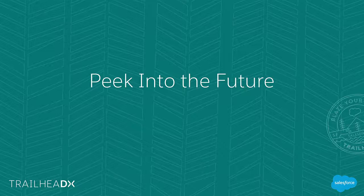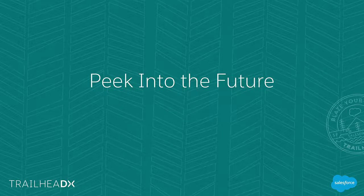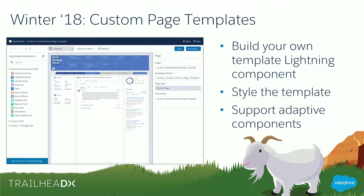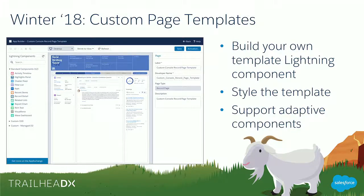We want to give you a quick peek into the future — something we've been working on for the Winter 18 release that we're really excited about: the ability to build your own custom page templates. If an admin has requirements beyond the one, two, and three column options available today, this empowers you as a developer to build a template and deliver that experience to end users. You can build a template with as many columns as you'd like, add your own styling, and even add JavaScript — for example, to make a region open and close. Let's dive in, show what the code looks like, and what it looks like in the Builder and at runtime.